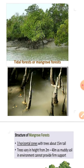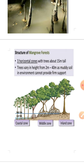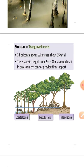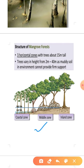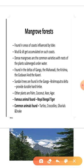The next kind of forest is tidal forest, also called mangrove forest. These forests are found in tidal or marshy regions. The structure of the mangrove forest has three horizontal zones with trees about 15 meters tall, varying in height from 2 meters to 40 meters. As the muddy soil cannot provide firm support, these forests are found in coastal zones, middle zones, and inland zones with varying heights.